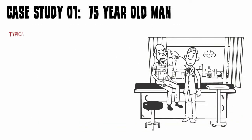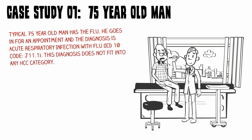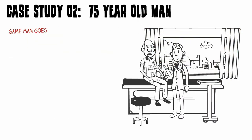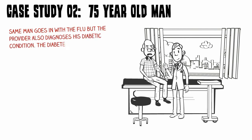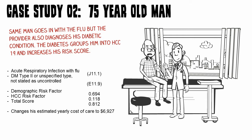Let's look at a case study of this 75-year-old gentleman. He goes into the doctor and he has the flu. The doctor codes the appropriate flu ICD-10 code, but this code does not fit into any HCC category, so his risk factor is solely based upon his demographics, which happened to be 0.694 — giving expected yearly costs of $5,855. If that same man goes to the doctor with the flu but the provider also diagnoses his diabetic condition, this diabetes groups him into HCC-19 and increases his risk score. He starts with a demographic risk score of 0.694; HCC-19 adds 0.118 for a total of 0.812, changing his estimated yearly cost of care to almost $7,000.